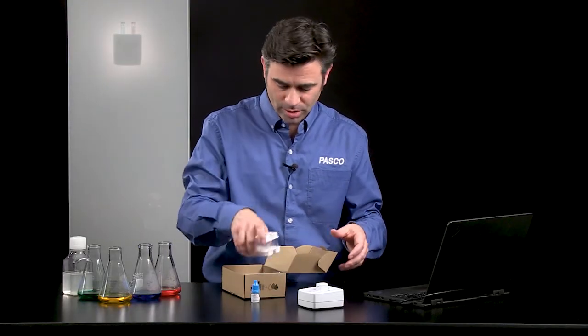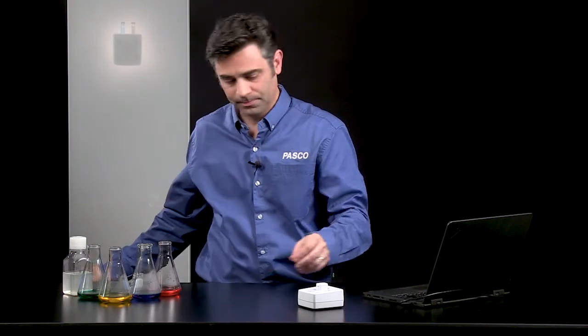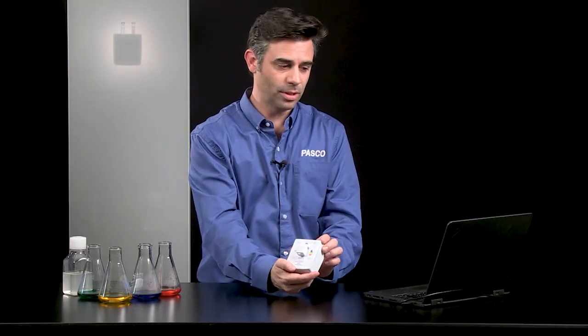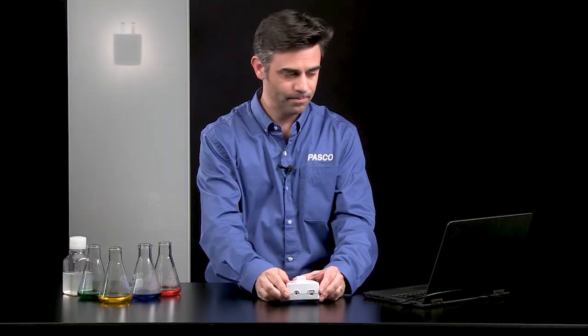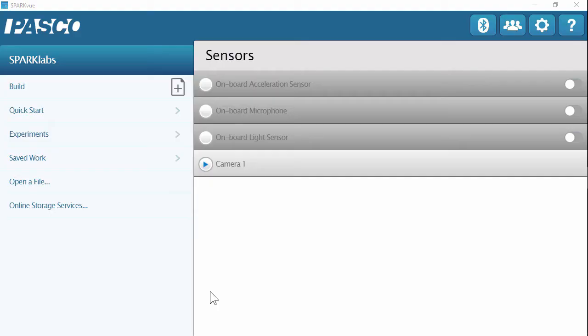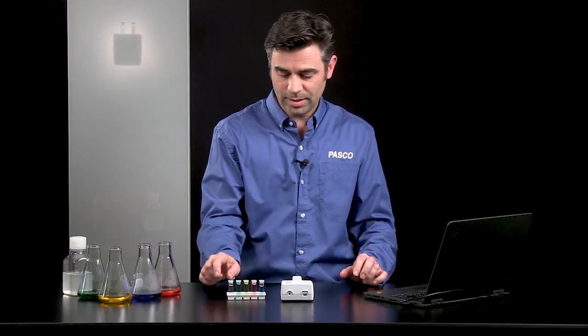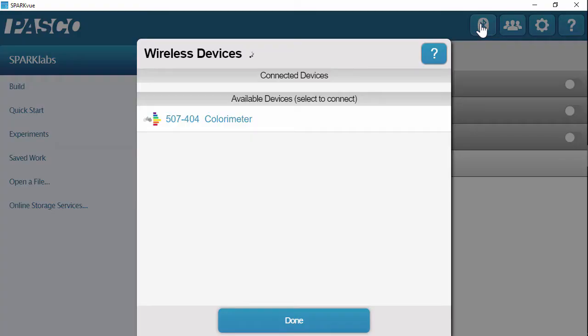So first, we are going to focus on the colorimeter. To do that, I'm going to connect it to my software, and I'm using SparkView software. So I'm going to turn on the colorimeter sensor and connect it via Bluetooth. And using the colorimeter, I'm going to test these prepared cuvettes. So my device pops up. I'm going to connect to it.